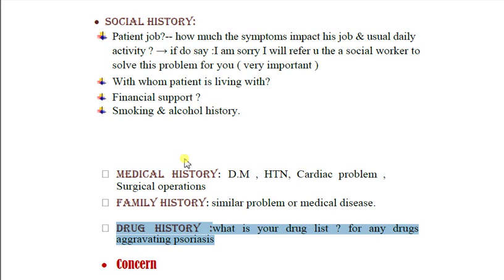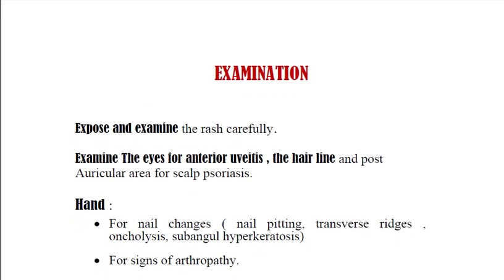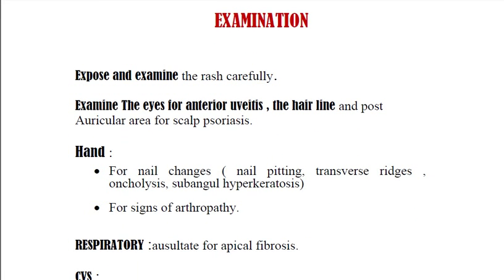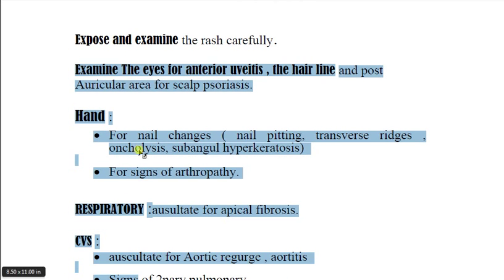After the history, proceed to examination — but remember, you must ask about the patient's concern. If you miss the concern, you lose the entire exam. For the examination of a psoriasis patient, expose and examine the rash carefully, asking the patient to show you where it is. Examine the eyes for anterior uveitis, and examine the hairline and posterior area for scalp psoriasis.